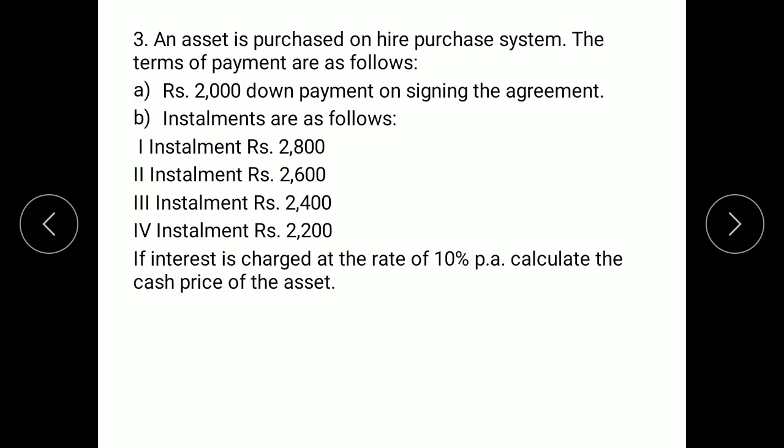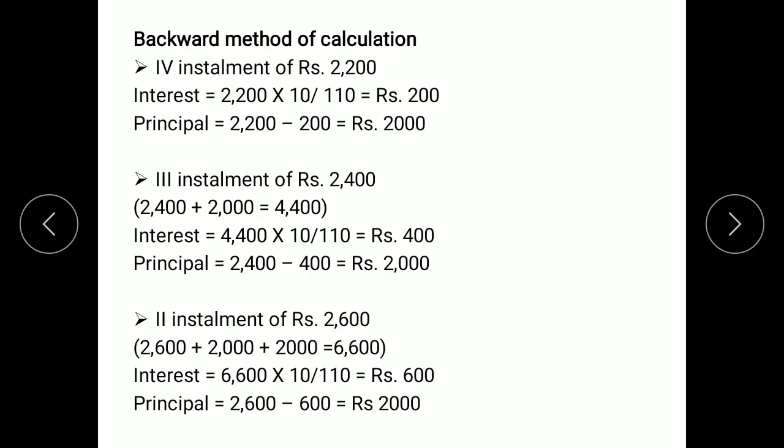In the third question, we are given the advance amount, details on installments, and a rate of interest, but the cash price of the asset is not given — so we are required to calculate it. When calculating cash price we use the backward method. Beginning with the fourth installment of rupees 2,200: interest = 2,200 × 10% ÷ 110 = 200. Principal = installment minus interest = 2,200 minus 200 = 2,000.